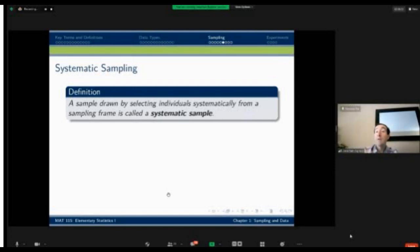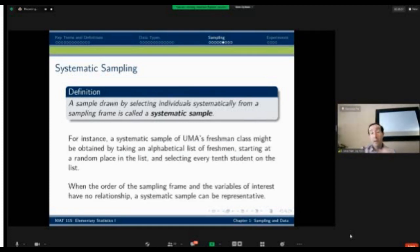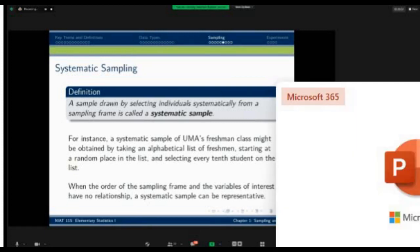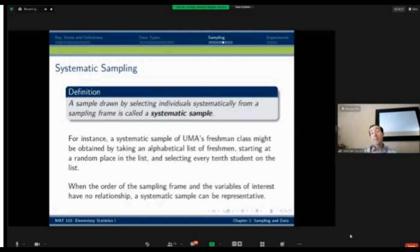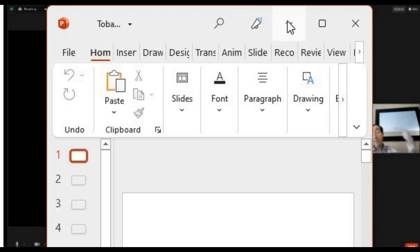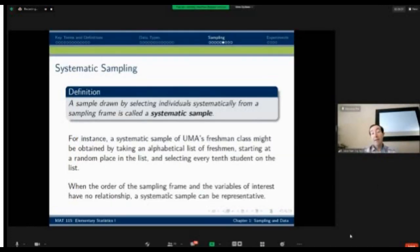A systematic sample would be coming up with a rule that allows me to decide where to start in that list and then how to deduce what the next member will be. So the most common way to do that is I take a list of people that might be in my sample, I can select a random place to begin and then select every 10th student or every 50th student on the list. And then I can keep going until I have either the desired number or until I have gone all the way through my sample or all the way through my frame.